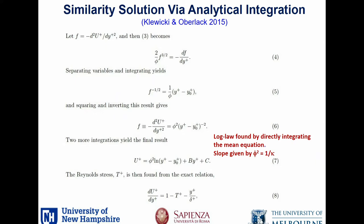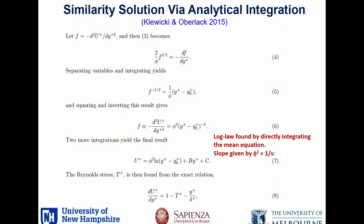Notice also that we have a linear correction term in the analysis with Martin Oberloch. We show that B has to approach zero as y+ becomes large or as the Reynolds number becomes large, and it has to decrease faster than 1/delta+, which the DNS data actually show. Once you have U, you can go ahead and solve for the Reynolds stress by integrating that equation once. That's the mean momentum equation analysis.